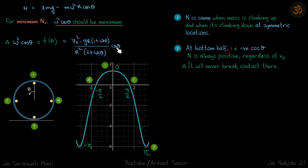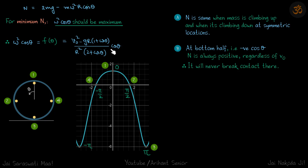Interestingly, because of the cosθ term, when θ = π/2 the whole ω²·cosθ term becomes zero, making N = 2mg. So the normal reaction at the positions θ = π/2 and θ = −π/2 is always 2mg. Also, since N is a function of cosθ and cos(+θ) = cos(−θ), the normal reaction is the same whether the mass is climbing up or climbing down.